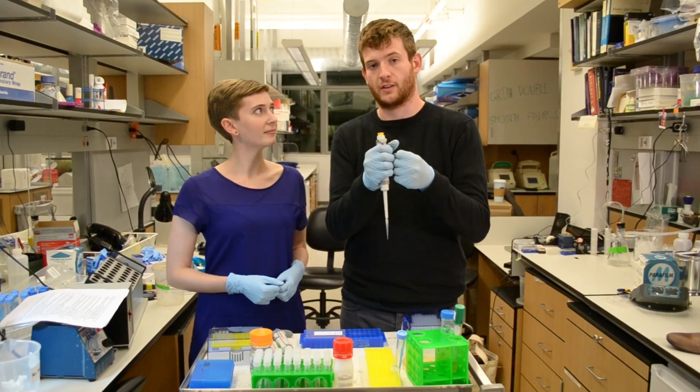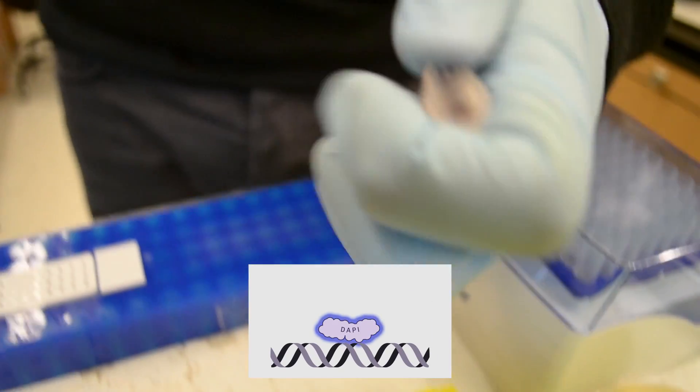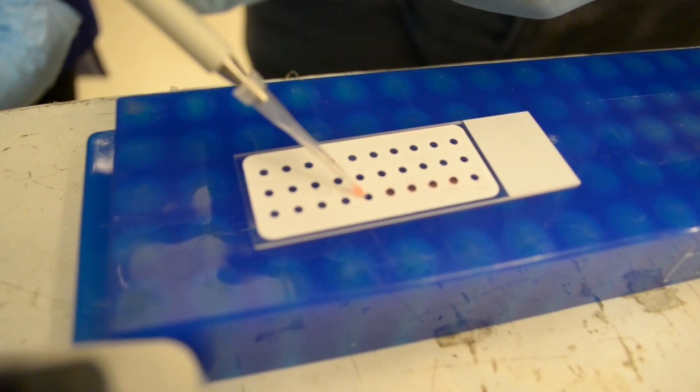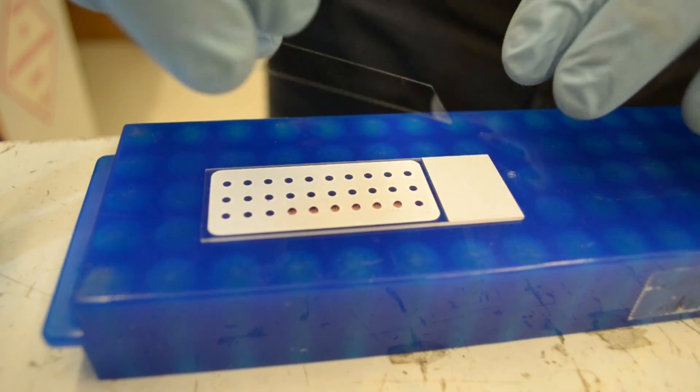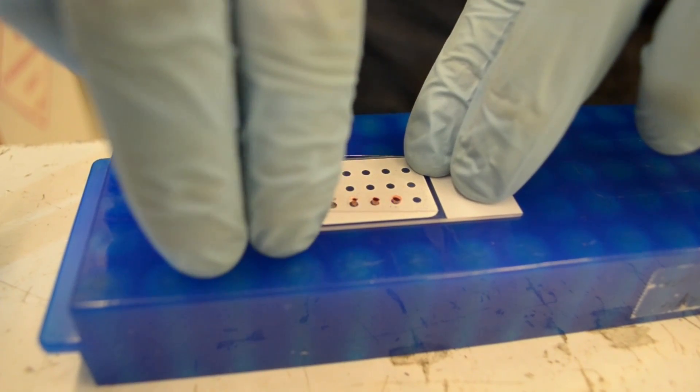DAPI is a dye that will bind the DNA, and when we look at it under a microscope it'll show up as bright blue. So now our cells are all ready. We just add a cover slip to the slide and this protects the cells while they're on the microscope.